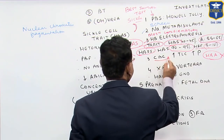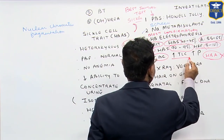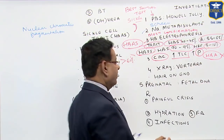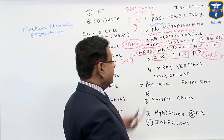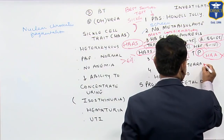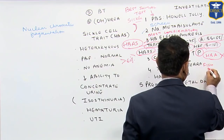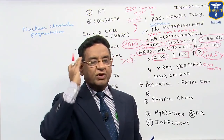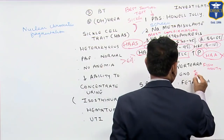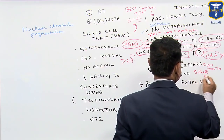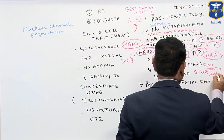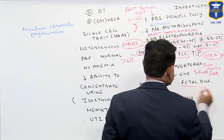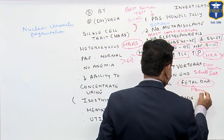In a complete blood count, there is increased TLC and increased platelet count (thrombocytosis). On X-ray of the vertebra you get fish-mouth vertebrae, and on lateral skull X-ray you get a hair-on-end appearance. For prenatal diagnosis, fetal DNA analysis is performed to look for the point mutation.